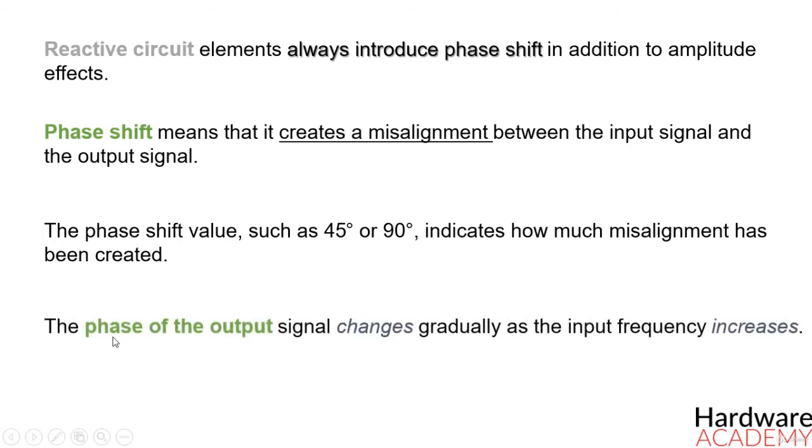The phase of the output signal, just like the magnitude of the output signal, changes gradually as the input frequency increases. In an RC low-pass filter, we have one reactive element, which is the capacitor, and consequently the circuit will eventually introduce 90 degrees of phase shift.